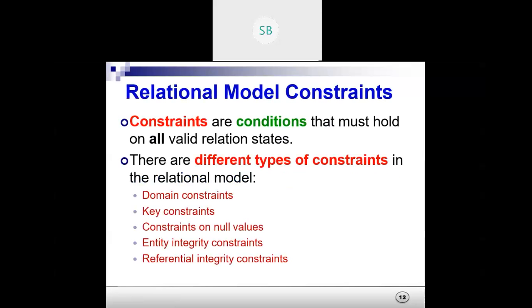We will study some of the constraints of the relational model — basically five types. You already know one, the primary key constraint, which you have used in the table. Constraints are conditions that hold for all valid relation states. The five types are: domain constraint, key constraint, constraint on null values, entity integrity constraint, and referential integrity constraint.